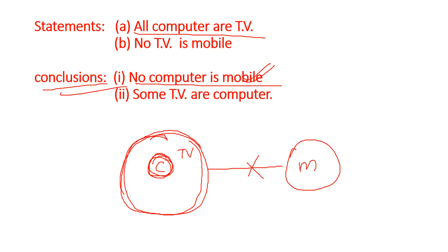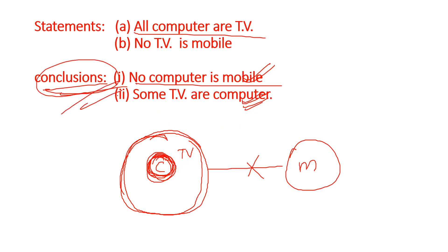Next conclusion: Some TV are computers. Since all computers are TV, some TV are indeed computers — this is also true. So both conclusions are true, and the answer is that both are correct.